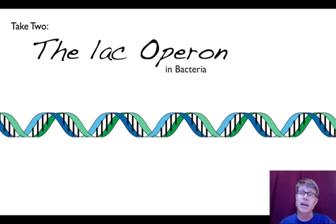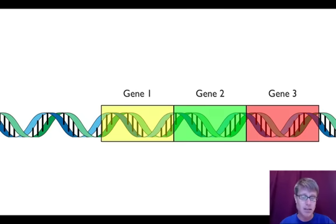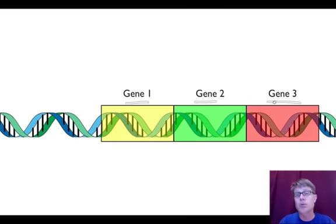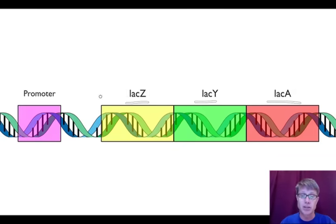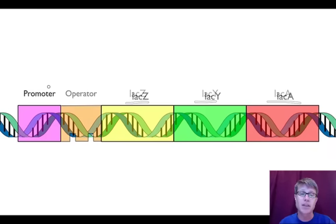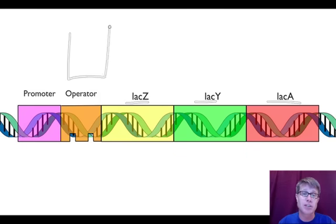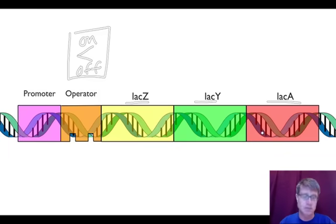Now let's talk about how this works in the lac operon in bacteria, the first one we really started to understand. In bacteria, instead of just having one gene, they'll have a number of genes — all the genes required to deal with lactose are put right next to each other. These are named lac Z, Y, and A genes, and each makes a protein that helps break down lactose. Above them is a regulatory sequence called a promoter — that's where RNA polymerase grabs on. An operon also has an operator, which sits right between the promoter and the genes, acting like an on-off switch to regulate whether we turn the genes on or not.